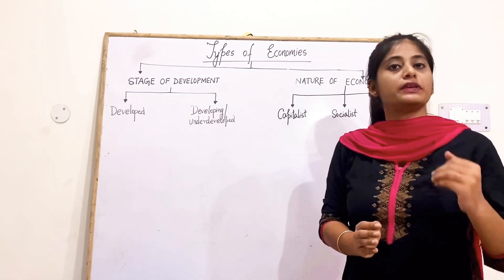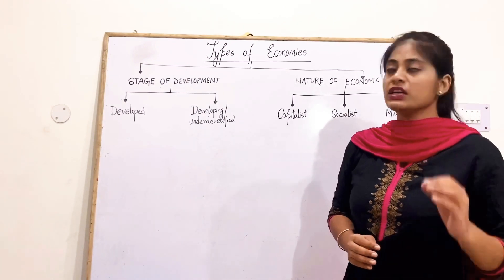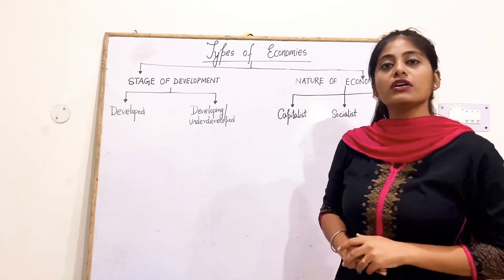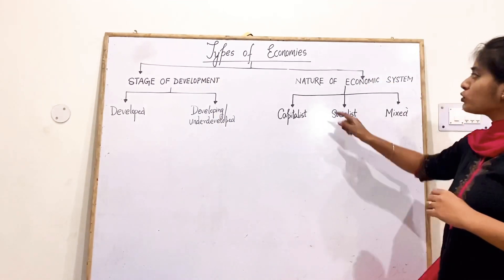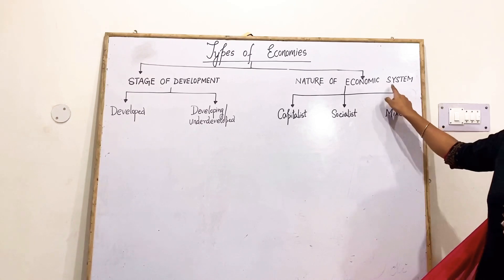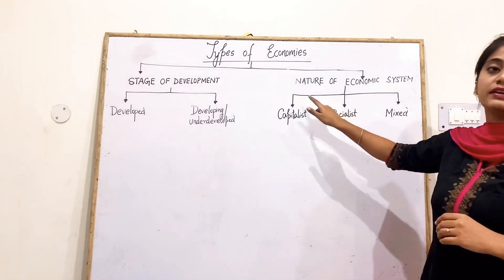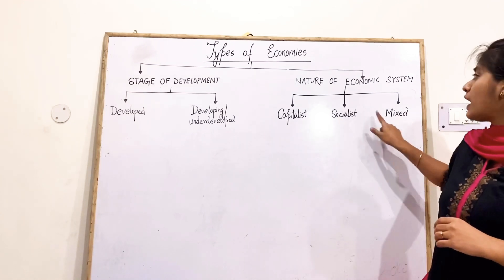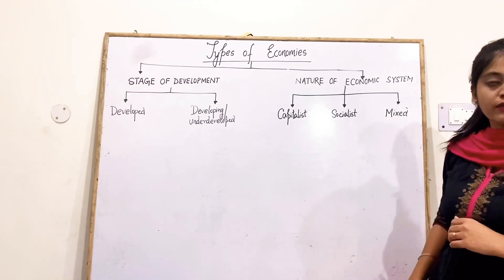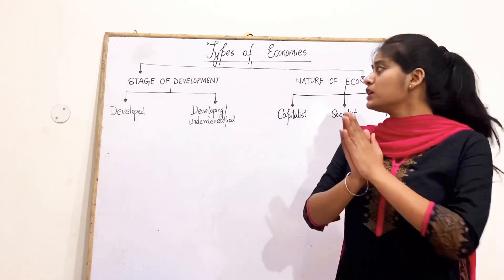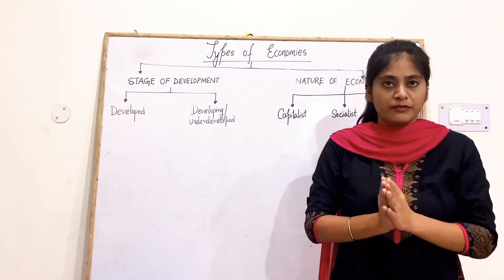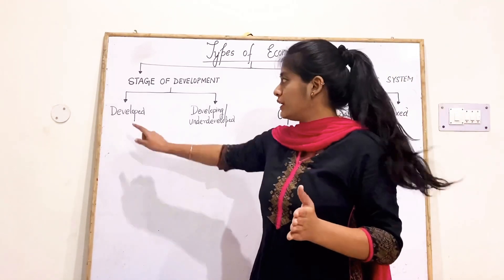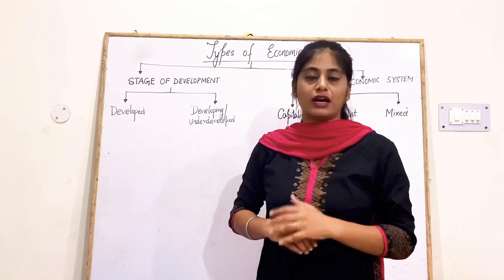On the basis of stages of development, you have to study what is a developed economy and what is a developing or underdeveloped economy. If we go through the nature of economic system, the economy has been divided into three parts: capitalist economy, socialist economy, and mixed economy. In this video, we will be covering the stages of development — developed and developing or underdeveloped economy.